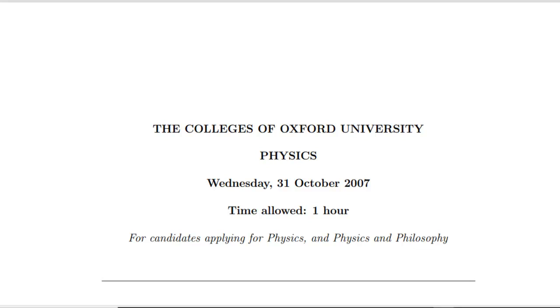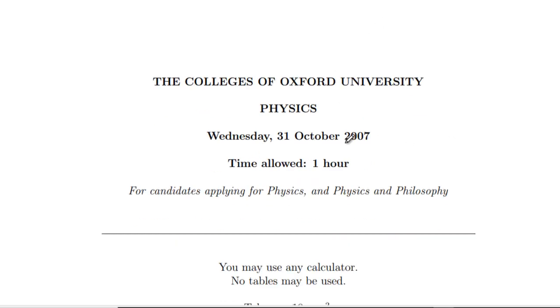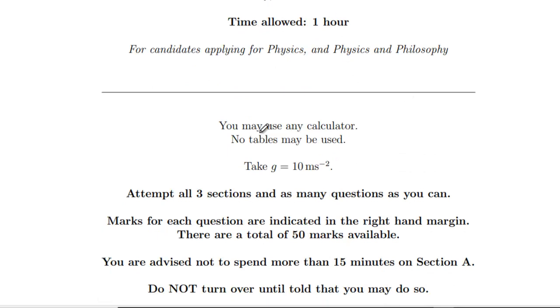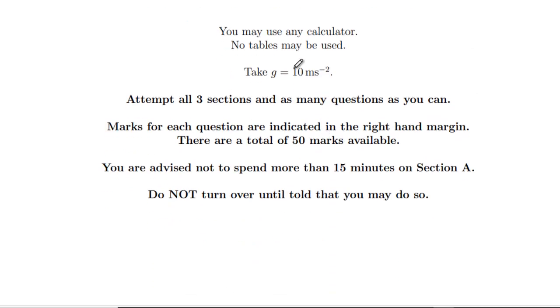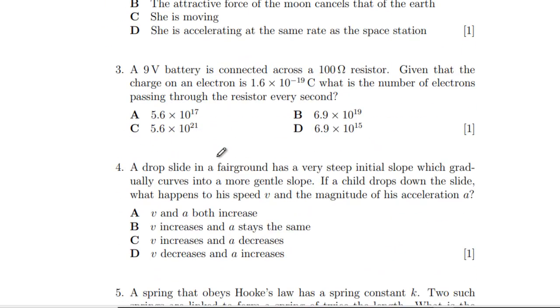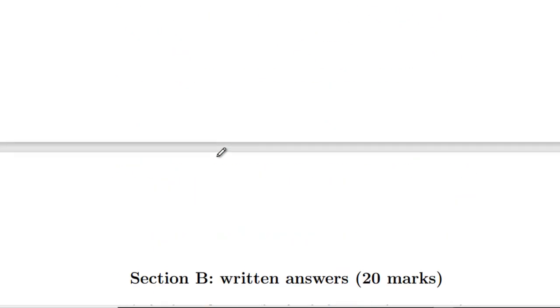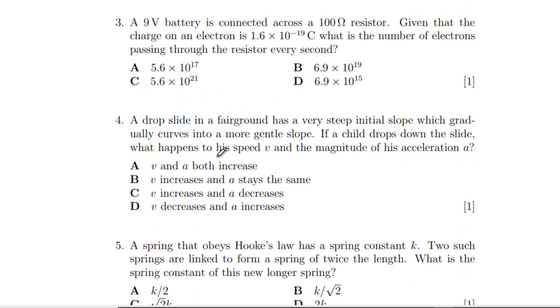Hello, in this video I'm going to go through the first section of the 2007 PAT, the Oxford University Physics assessment test. The first part allows an hour, but they divide it into sections. You can use a calculator, g is 10 meters per second squared. I'm just going to do Section A - they say don't spend more than 15 minutes on it. Let's see what we can do in 15 minutes. How many questions have we got? Nine questions, so that might not be too bad.